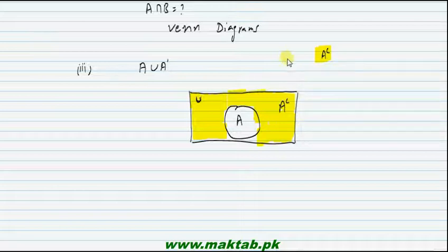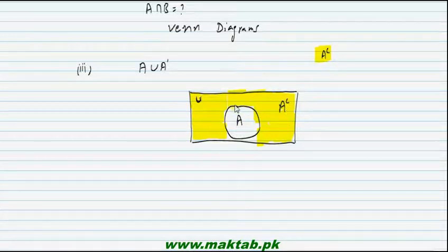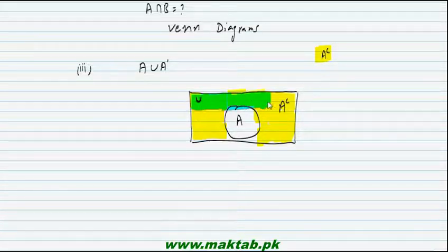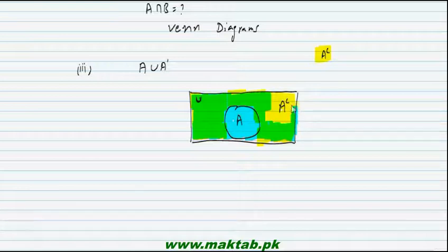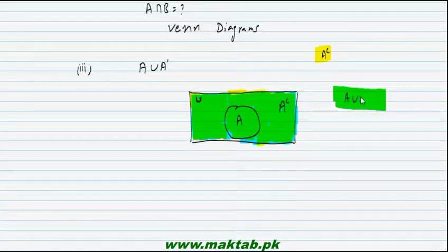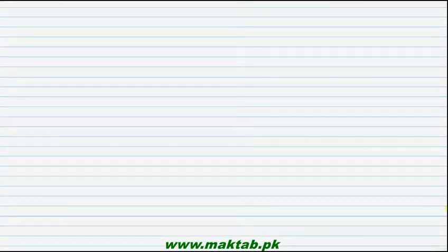A union A complement — which includes A and A complement shown in yellow. I will shade this region; we will show it in green color. This green color shows A union A complement. This region is A union A complement. The rest of the parts are similar.